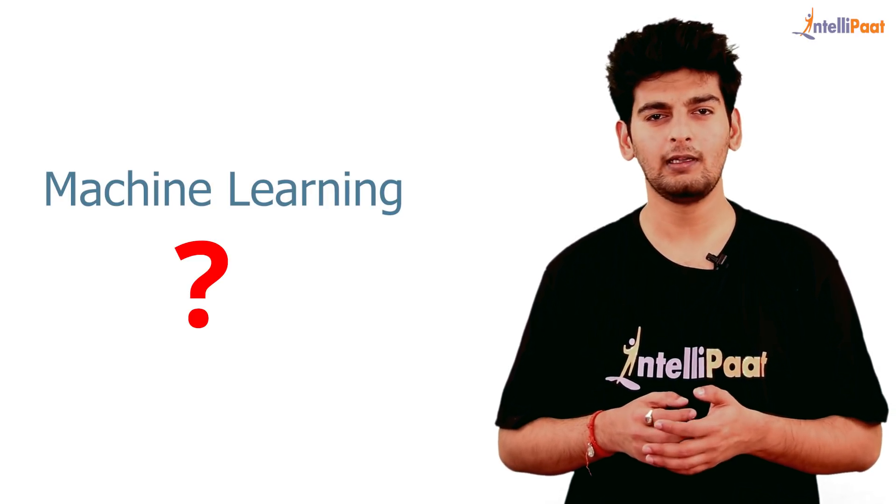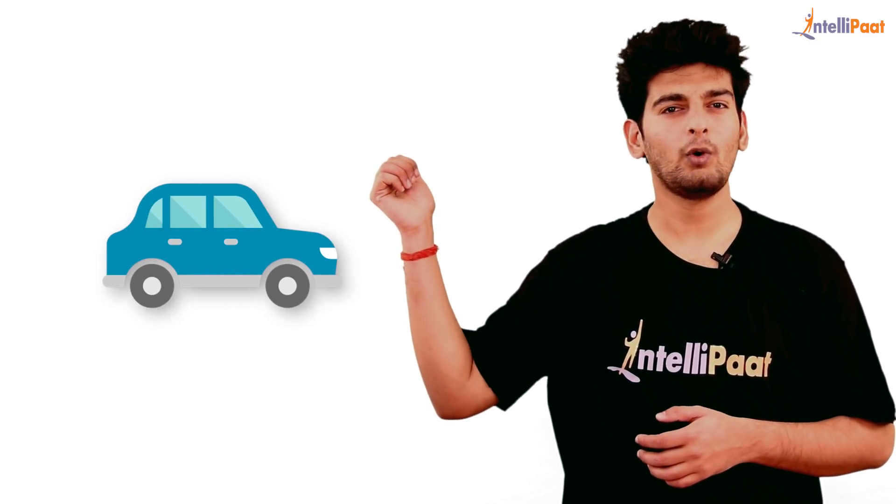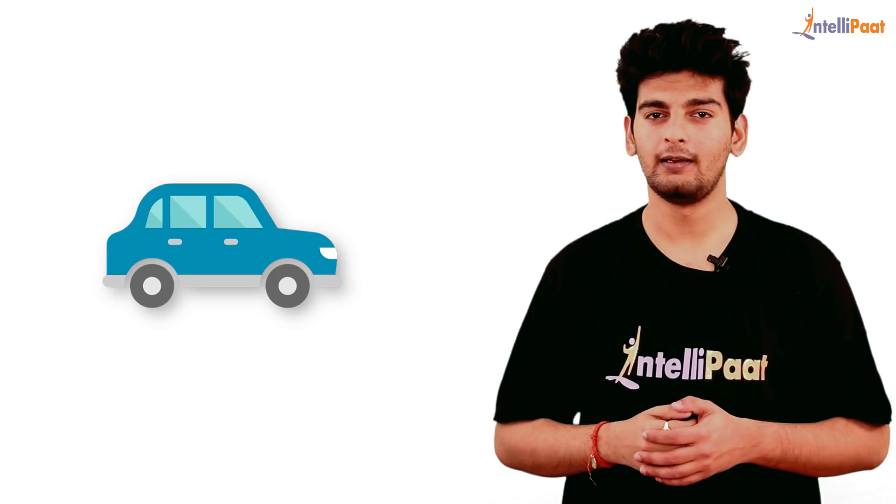So we'll understand the concepts of machine learning with this little example over here. So what do you see over here? What is it exactly? It's a car, isn't it? And how about this? Well this again is a car. And this? Well this too is a car.